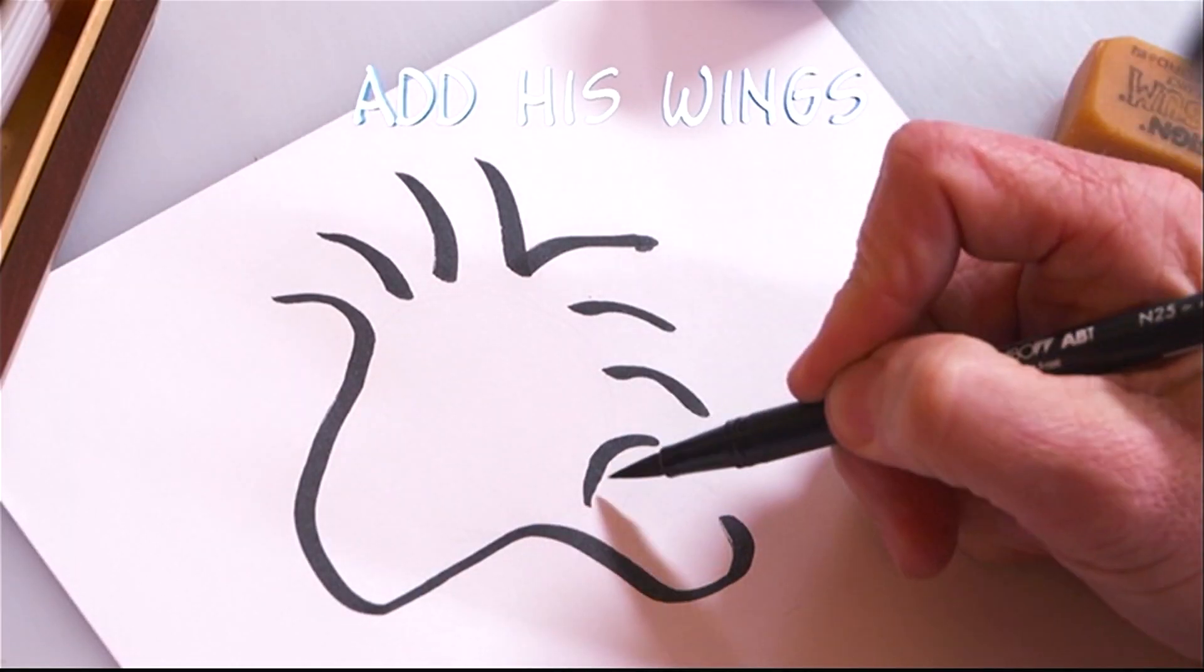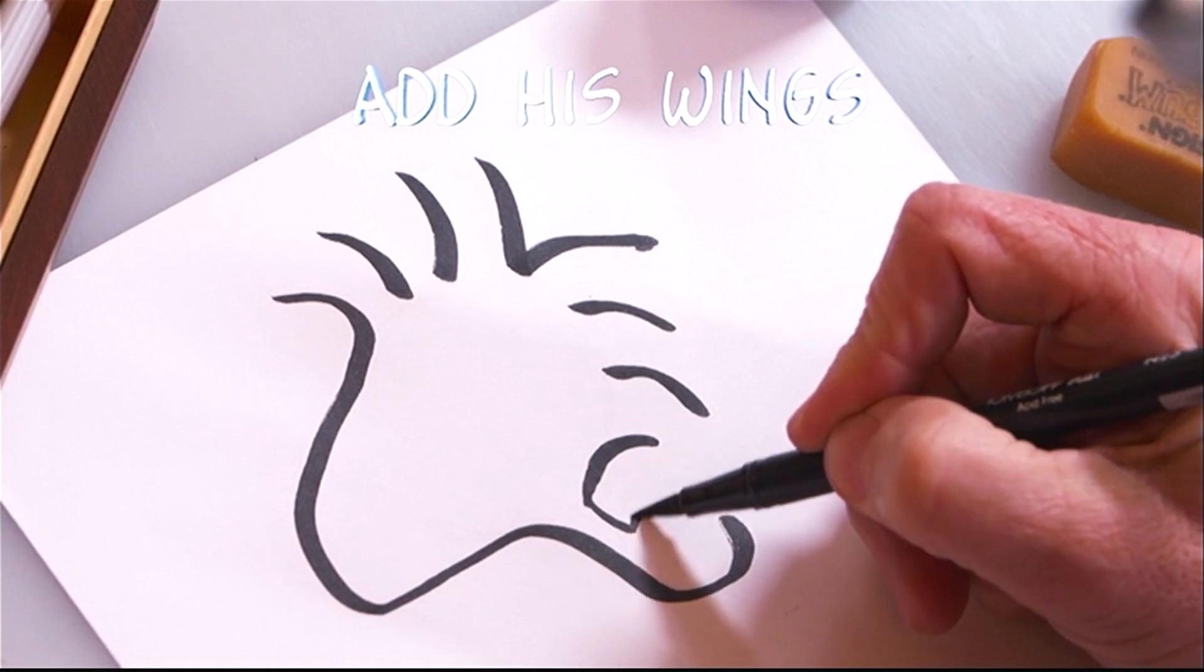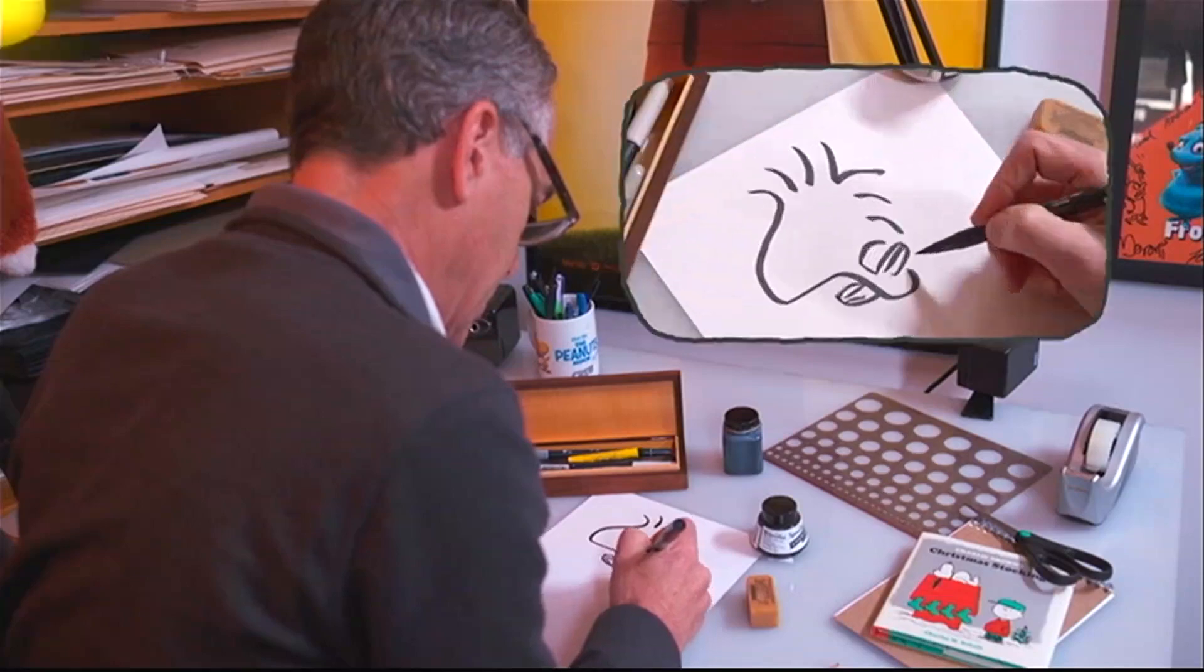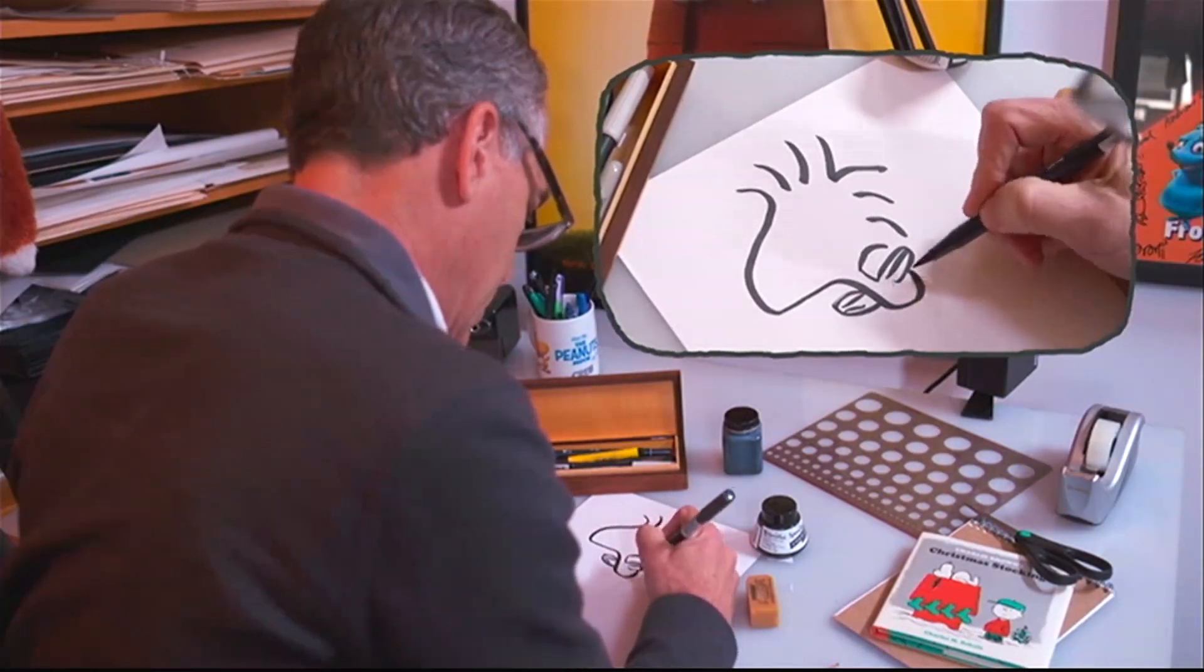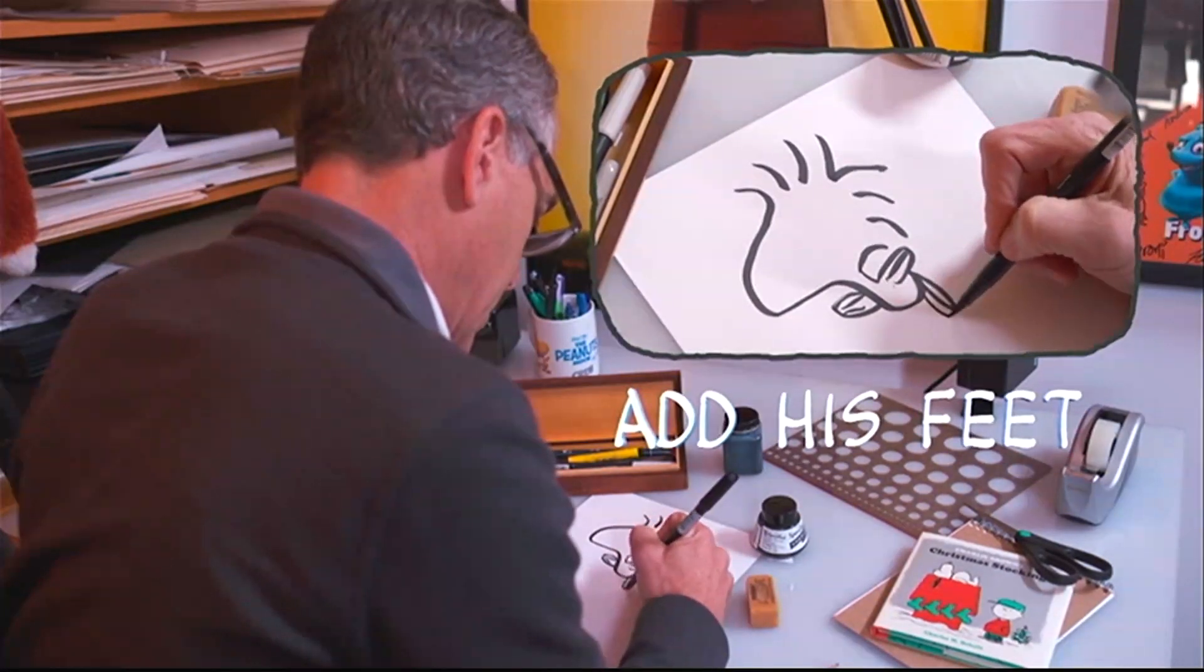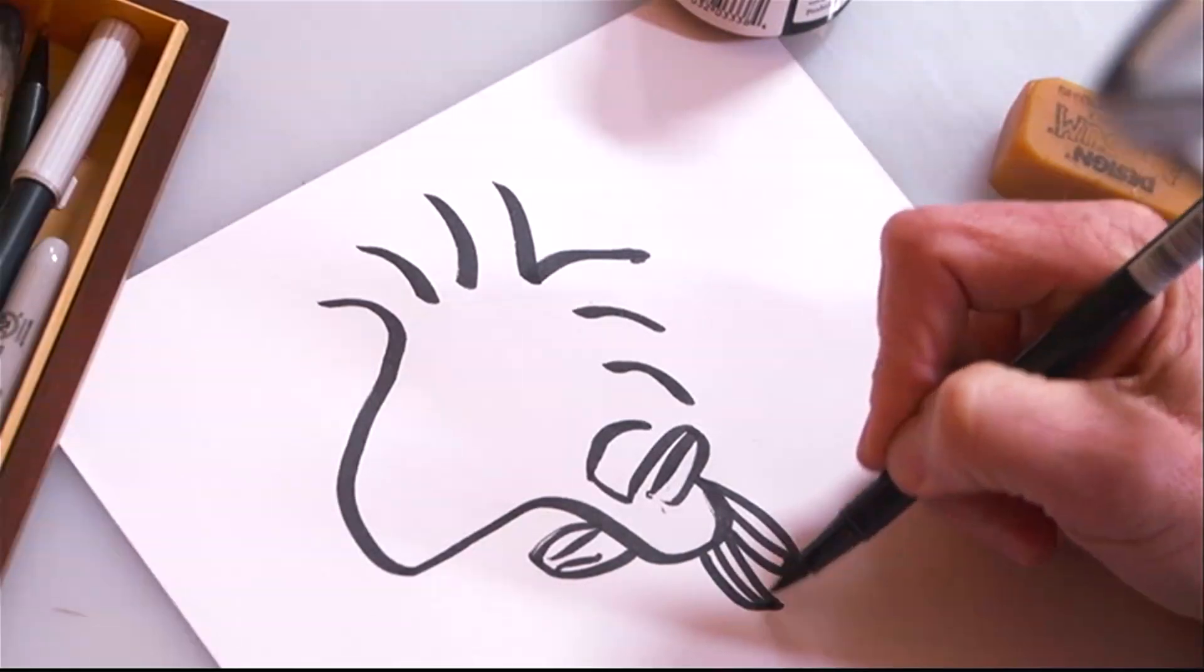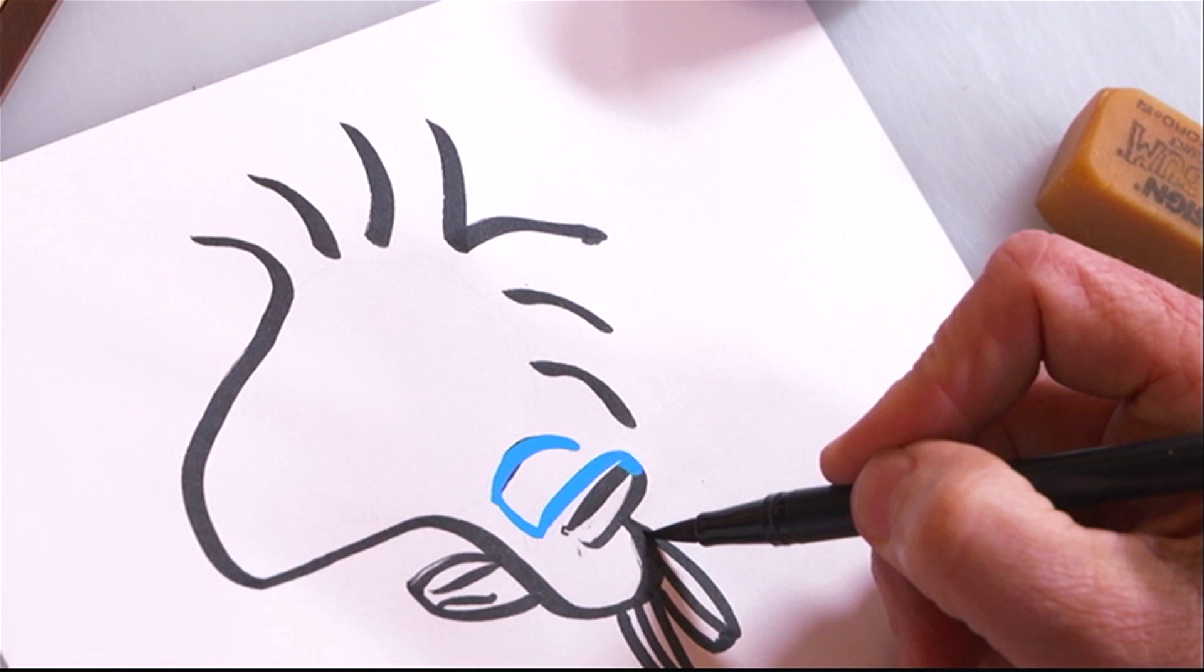His body, wings, and feet make up the other half. Woodstock's feet each have three lines. Push the pause button now to practice drawing Woodstock's wings and feet. Then push play when you're ready to continue.